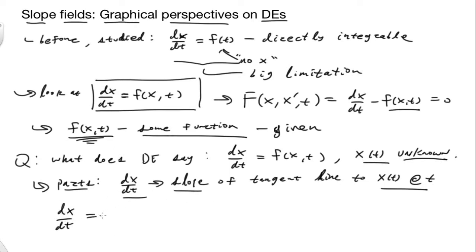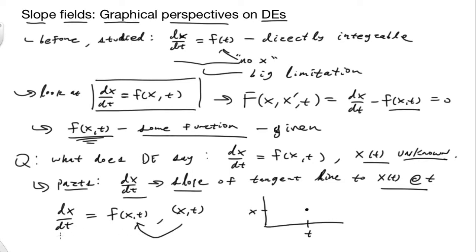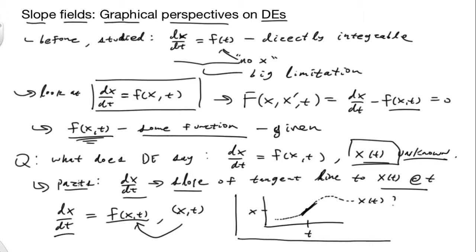Because dx/dt equals f of x comma t, if I have an x and a t — some point in space and time — I may not know what x of t does there, but I know its slope at that point. I can plug that value in and draw a little slope line. We're going to generalize this concept and generate what we call a slope field.